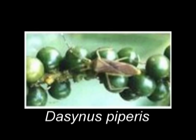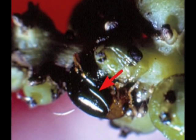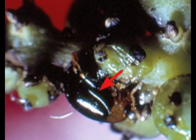Another bug, Dasynus piperis, is distributed in Indonesia and Malaysia. The adult bug measures about one centimeter in length. When the immature berries are attacked, they turn black and drop off prematurely. Pollu beetle or Longitarsus nigripennis is the most destructive pest of pepper in India. The adult is a small black beetle measuring about 2.5 by 1.5 millimeters in size.